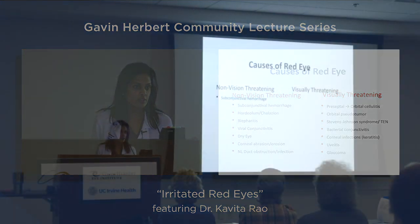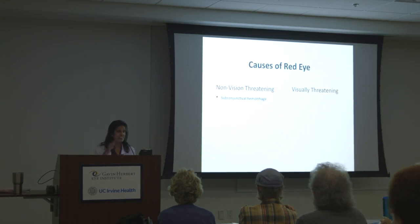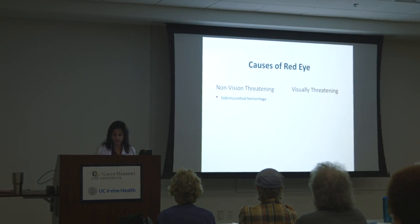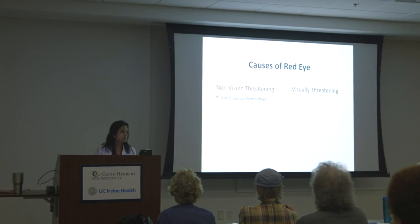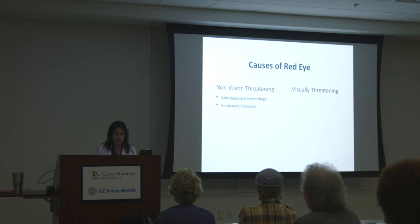So, subconjunctival hemorrhage — you might have seen this or had one when people cough really hard or are straining. They get blood in the white part of the eye. It goes away, just like a bruise on the skin. Once it resolves, it has no effect on vision. It's usually harmless; it just looks really bad but doesn't harm the eye.